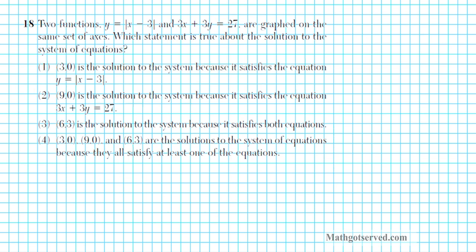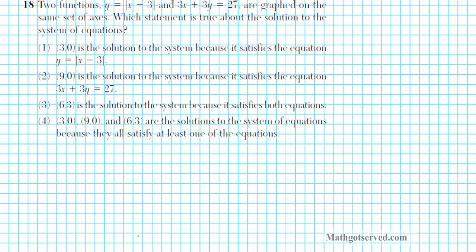Let's take a look at problem 18. It says two functions, y equals the absolute value of x minus 3, and 3x plus 3y equals 27, are graphed on the same set of axes. Which statement is true about the solution to the system of equations? We're looking for the intersection point as the solution. Let's graph the first one: y equals the absolute value of x minus 3. This is a standard absolute value function shifted three units to the right.